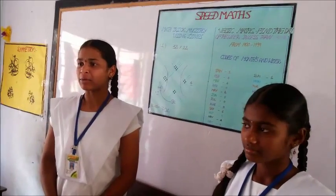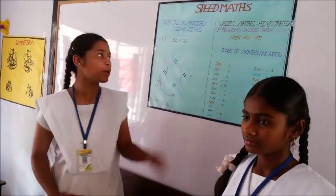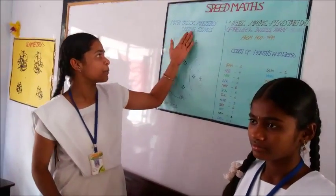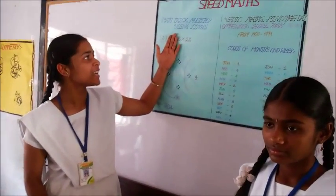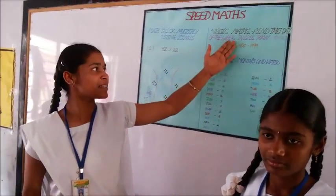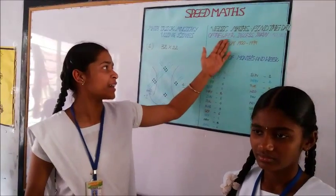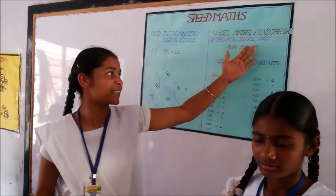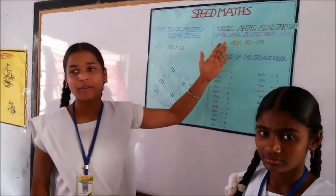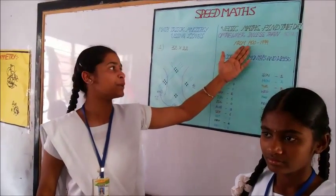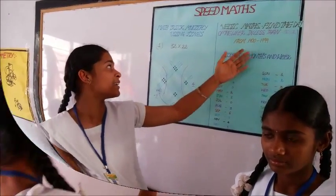Today we are celebrating National Science Day. We are telling about feedback about massive multiplication using lines, and in Vedic math, finding the day of the week in less than 30 seconds from 1900 to 1999.